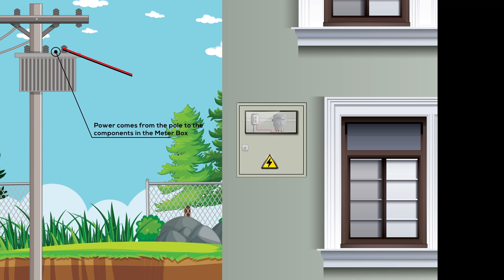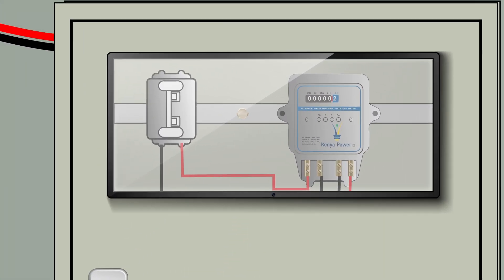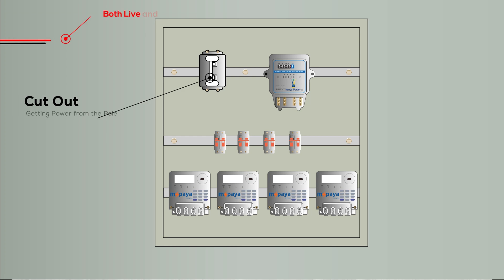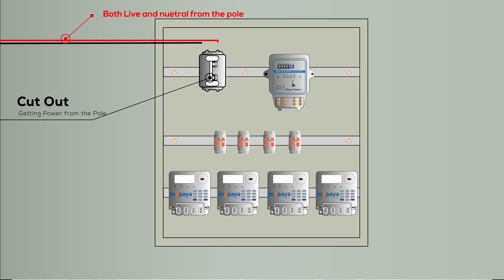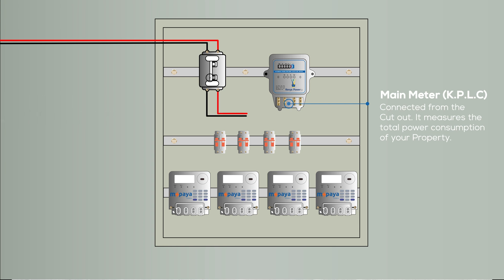Power comes from the KPLC pole into the meter box so that it can be distributed to the different components in the meter box. From the pole, you connect both the live and neutral wires into the cutout. From the cutout, the power is connected to the main meter from KPLC. The main meter is used to measure the total power consumption on your property.